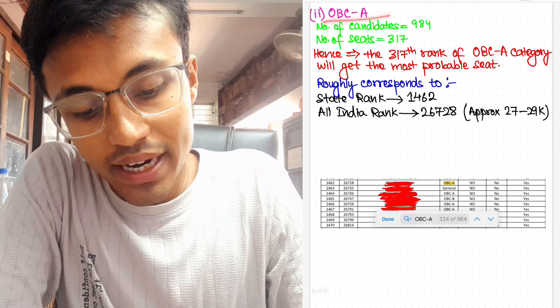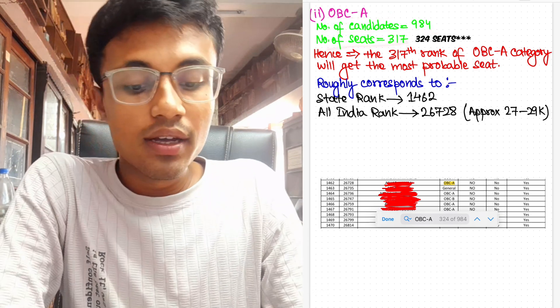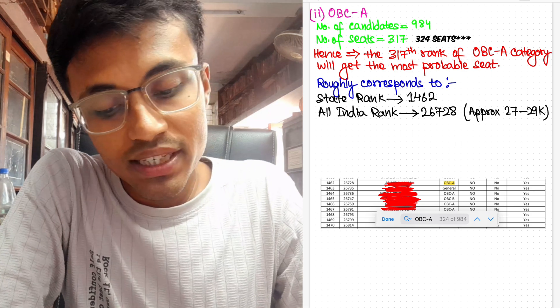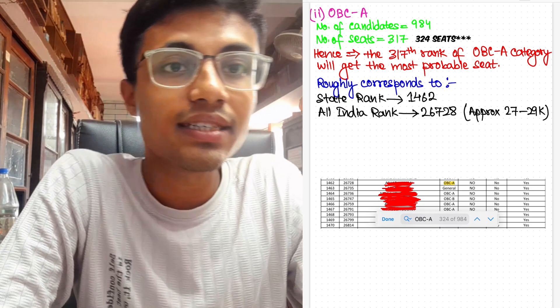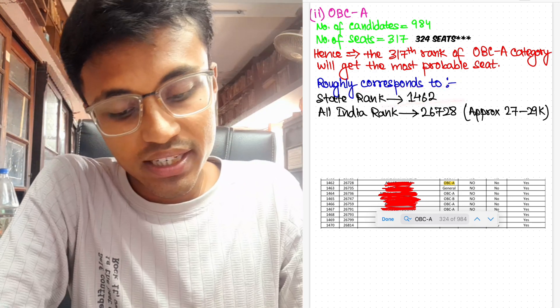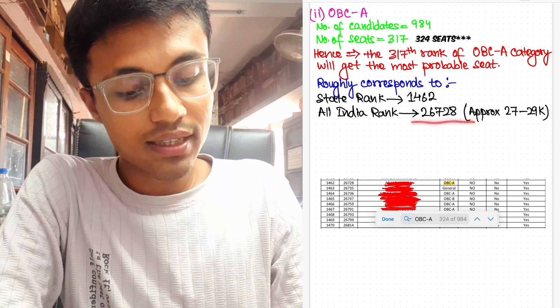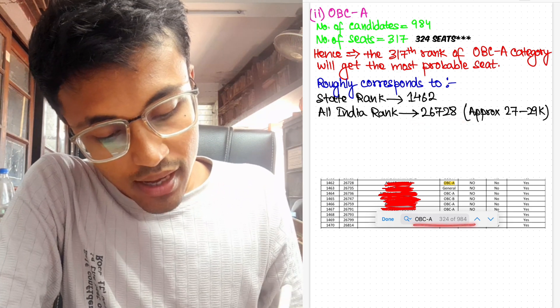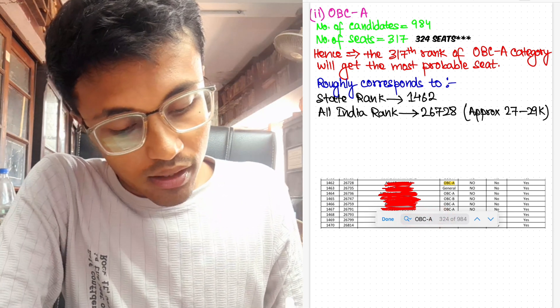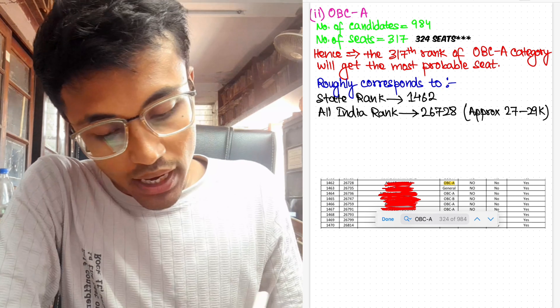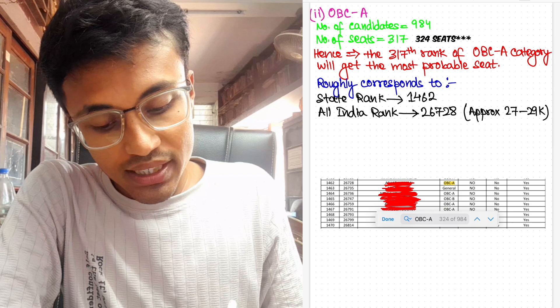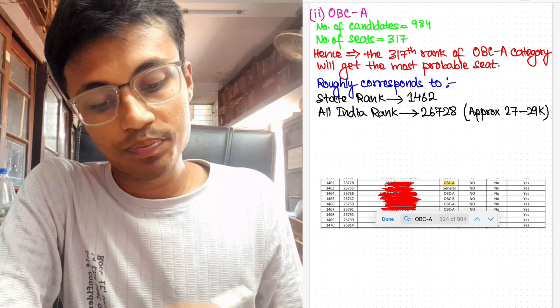For OBC-A, number of candidates are 984 and the number of seats allotted is 317. Hence the 317th rank of OBC-A category will get the most probable seat considering it all goes in serial number, which roughly corresponds to state rank 1,462 and All India rank 26,728. And as you can see on the screen, I have searched from the provisional data the 324th rank of 984, and it roughly corresponds to 1,462 and 26,728.